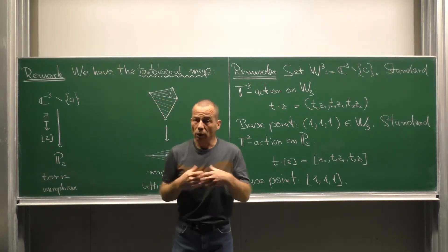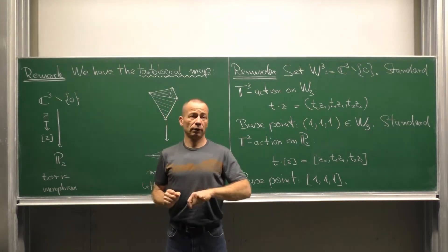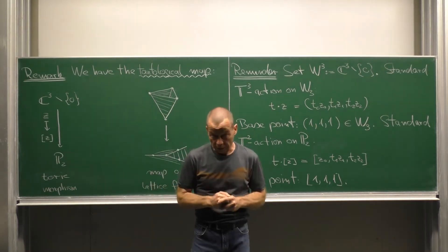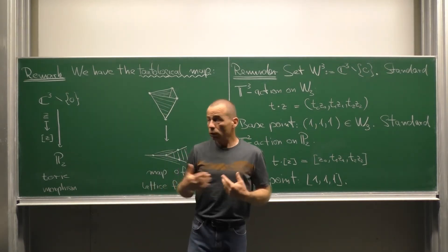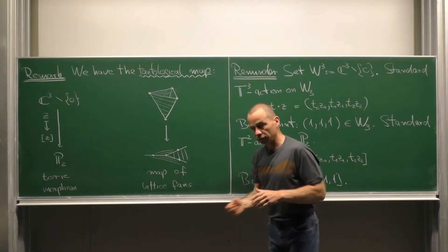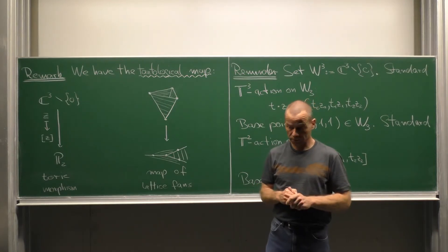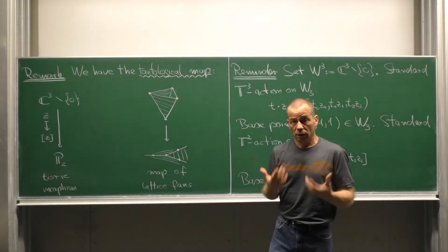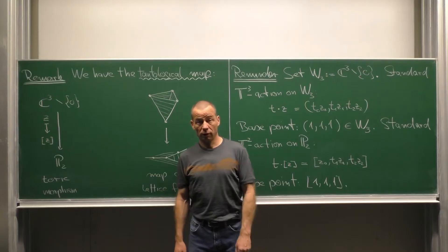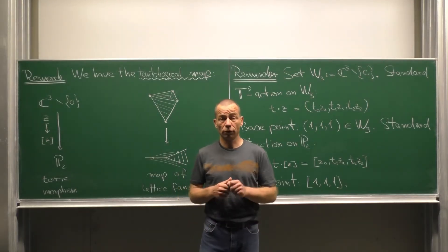Now we learned that toric varieties are in a functorial correspondence with lattice fans. So this toric morphism should have a counterpart on the side of lattice fans, a map of lattice fans. It's our task to work this out in the next minutes.